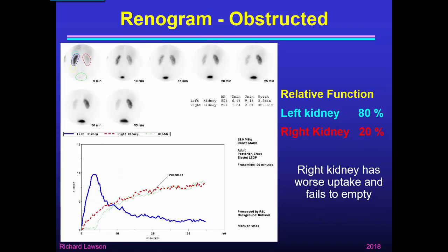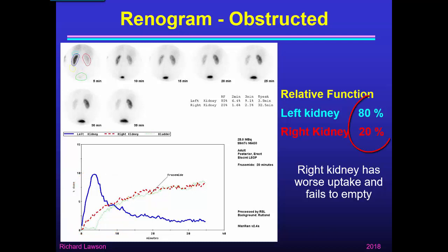Here is a result for an abnormal study. Looking at the 5-minute image, there's a lot more activity in the left kidney than in the right. The blue curve for the left kidney rises normally, but the red curve for the right kidney rises only slowly in comparison. The computer calculates that the left kidney has 80% of the patient's total renal function, with the right kidney contributing only 20%. Moreover, although the left kidney reaches a peak at 4 minutes and thereafter empties, the right kidney doesn't empty at all — it keeps going up, indicating that activity is accumulating without passing on into the bladder. On the 35-minute image, the left kidney has emptied but there's quite a lot left in the right kidney. So the right kidney not only has worse uptake, but it also fails to empty — it's obstructed.